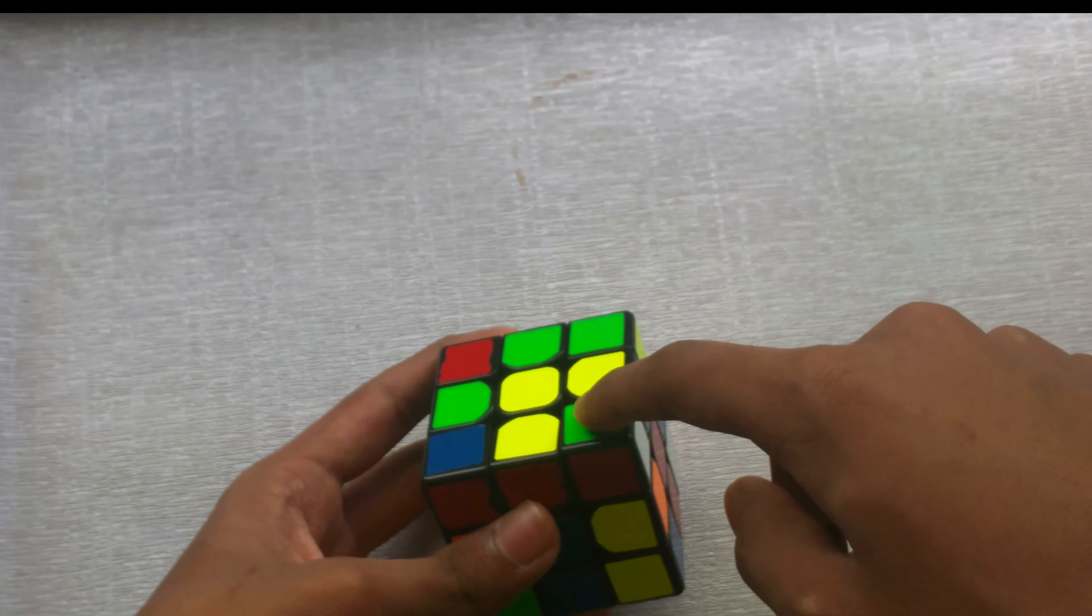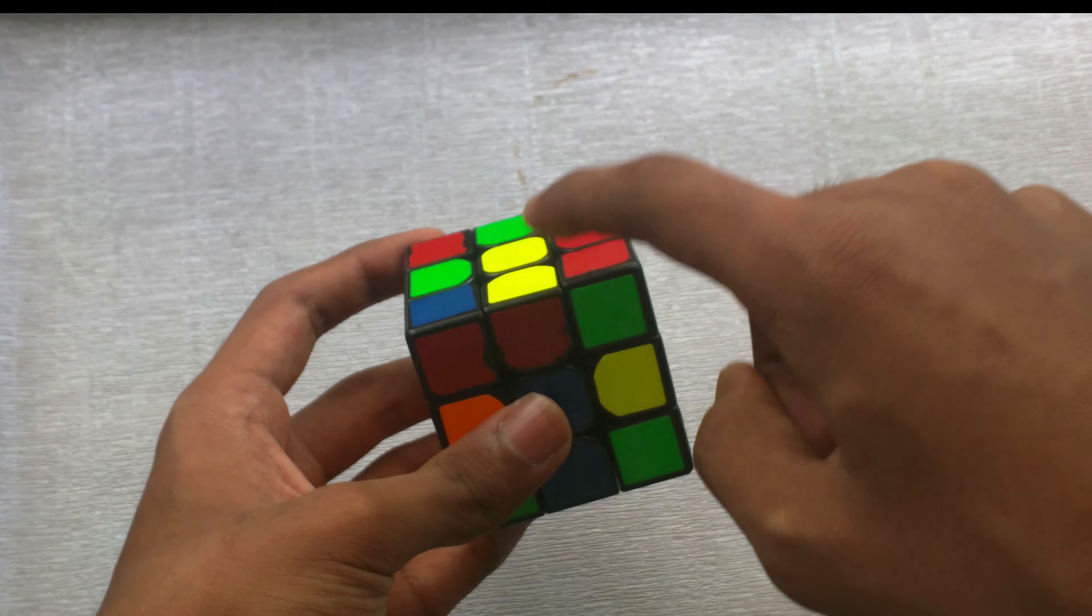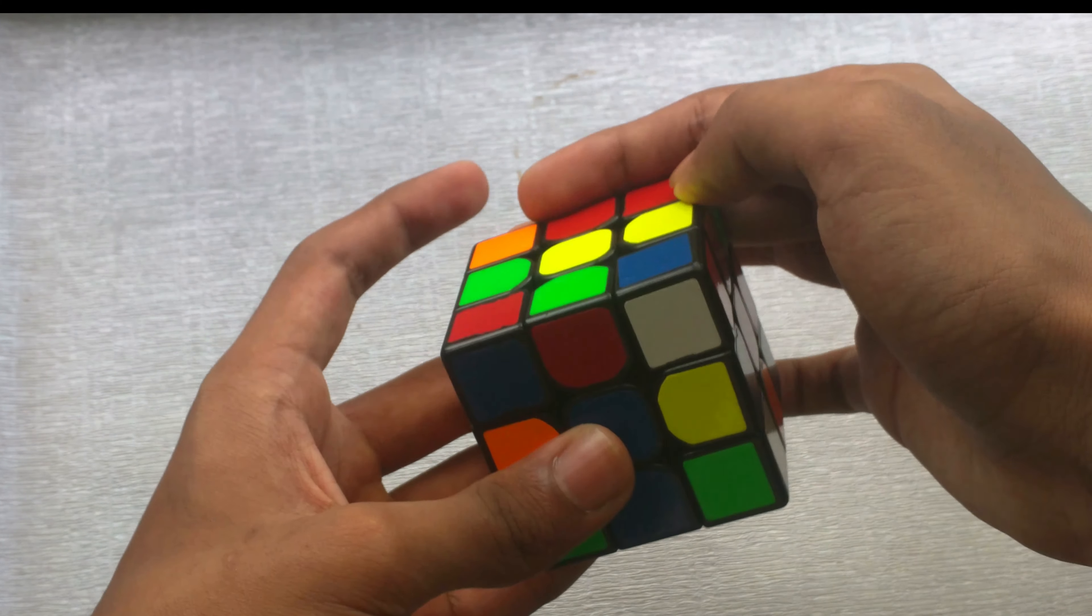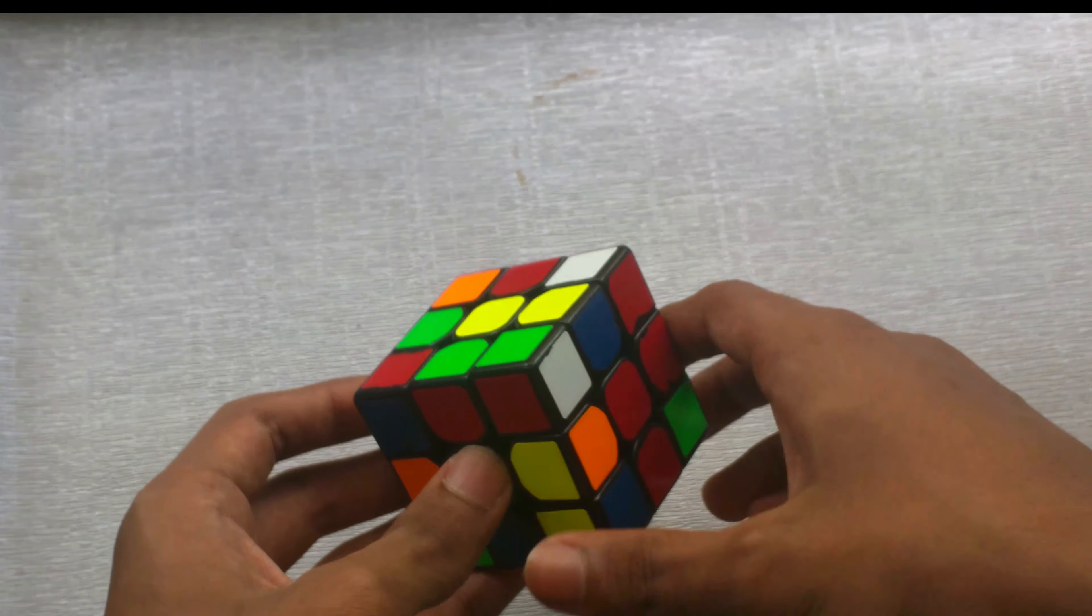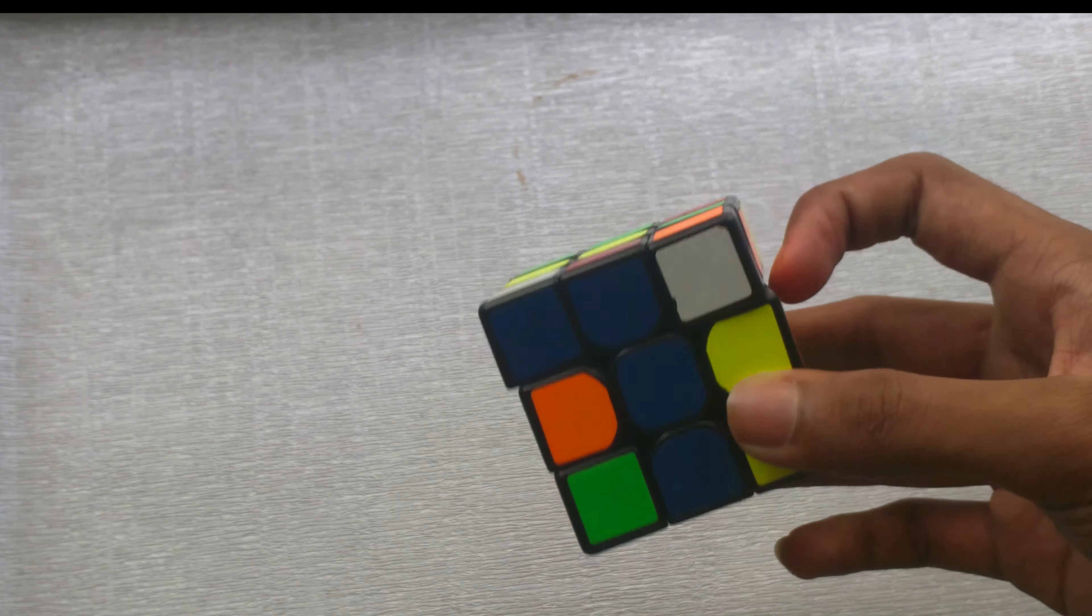So in this case, the corner was over here. You want to remember that. You want to push it down and move this edge over here because it will be next to the corner when you put this back up. So if you move the edge and move this up, then it forms a pair. So after you finish this pair...